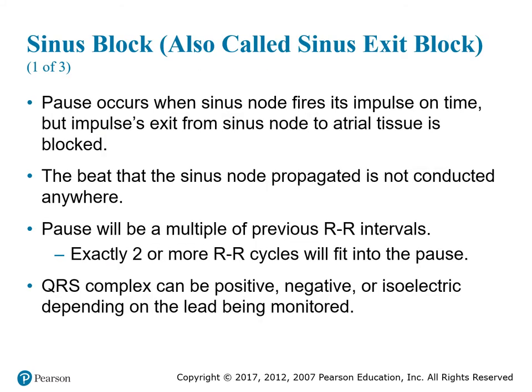The last rhythm in the sinus category is called a sinus block, also called a sinus exit block. It almost looks like a sinus arrest, but the difference is that with a sinus exit block, the sinus node fires its impulse on time — but the pulse exit from the sinus node to atrial tissue is blocked. The beat the sinus node sends out is not conducted anywhere; it's just hanging in limbo. The pause will be a multiple of previous R-to-R intervals — exactly two or more R-to-R intervals will fit into the pause.